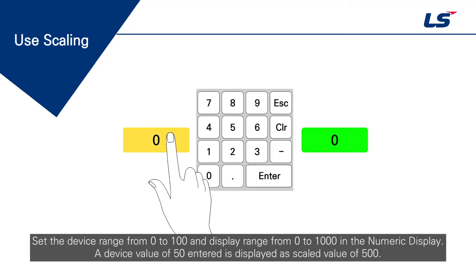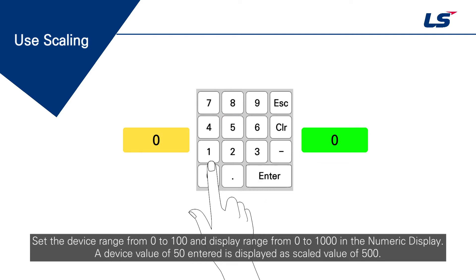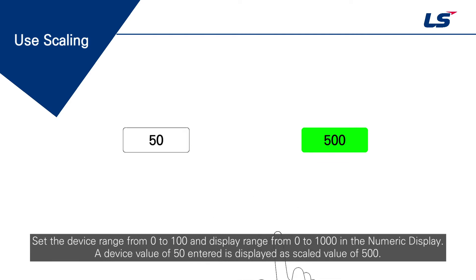Set the device range from 0 to 100 and display range from 0 to 1000 in the numeric display. A device value of 50 entered is displayed as a scaled value of 500.